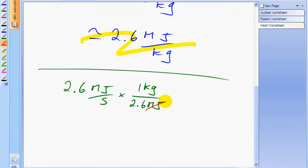And you'll see that the megajoules units cancel, leaving us with kilograms per second. We're going to discover that there's 1 kilogram boiled off every second given a heat source of power 2.6 megawatts.